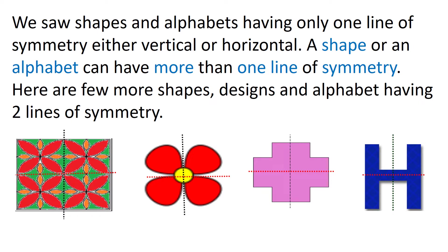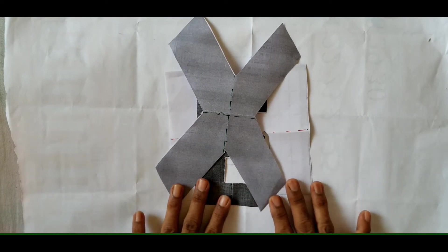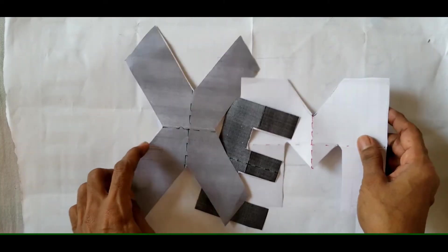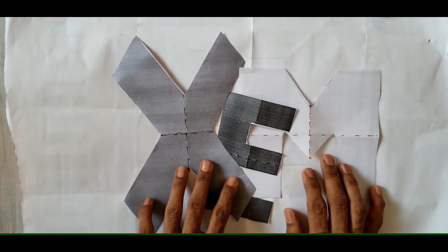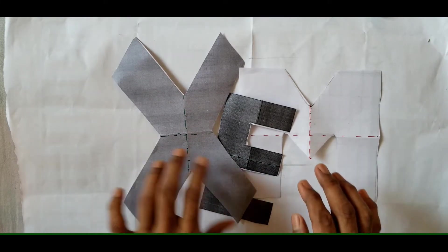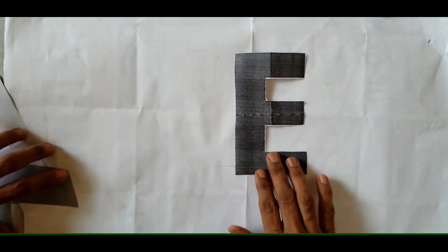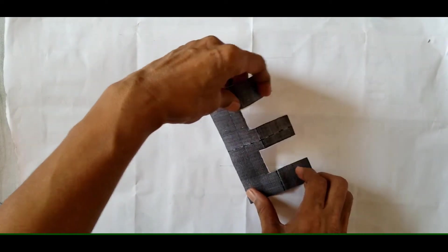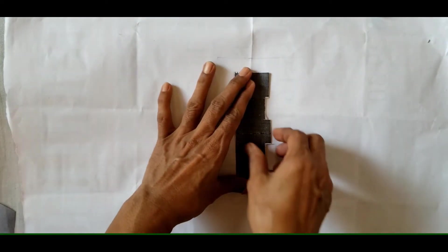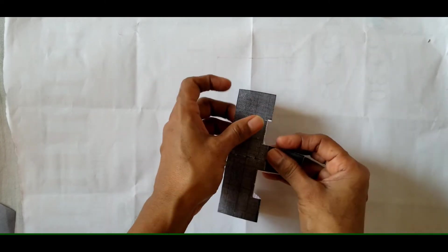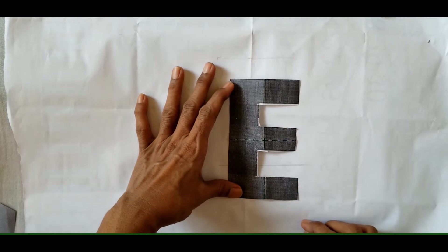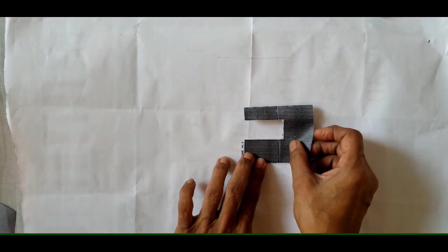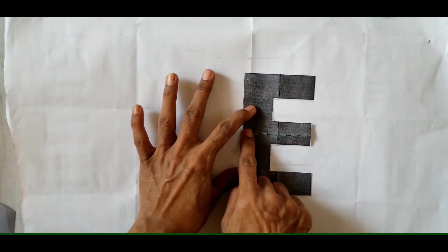Let us do an activity to see this practically. I have a few English alphabet cuttings. Let us take the letter E first. I have drawn one vertical line and one horizontal line. Let me fold it along the vertical line — does it cover fully? No. So vertical line of symmetry is not possible in E. Now let me fold it horizontally — this portion coincides with this portion. So we can say letter E has a horizontal line of symmetry.